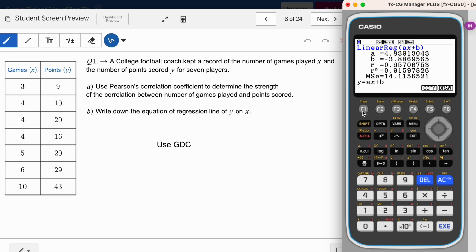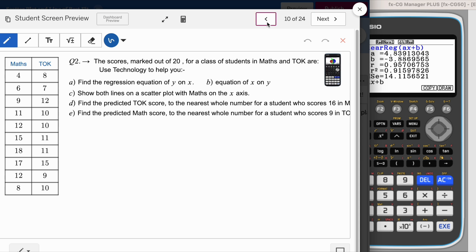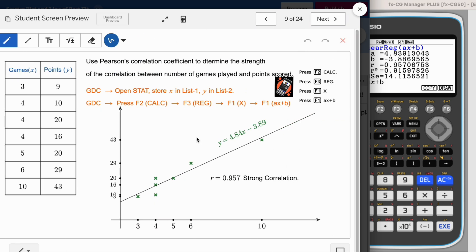Go to ax plus b if you want to see again. You can check what we did on calculator. That was our line 4.84x minus 3.89. And r is 0.957, a very strong correlation.